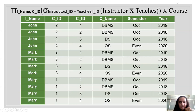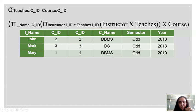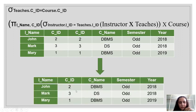We take the original query and modify it by adding sigma with the condition teaches.C_ID equals course.C_ID. This selects only three rows where the C_ID values match. The two duplicate C_ID columns are then removed since they have the same values, giving you the cleaned relation. This query is easy to understand when you see it laid out in this manner.